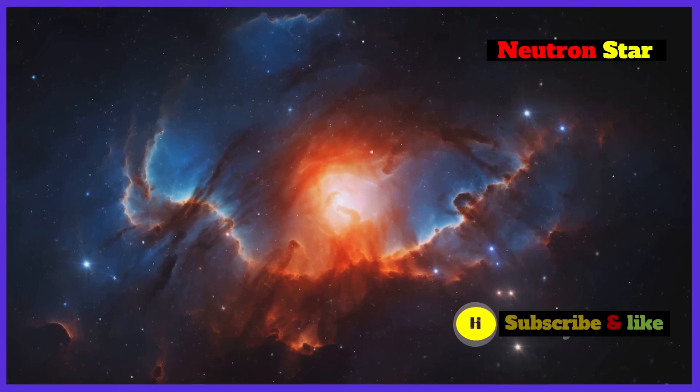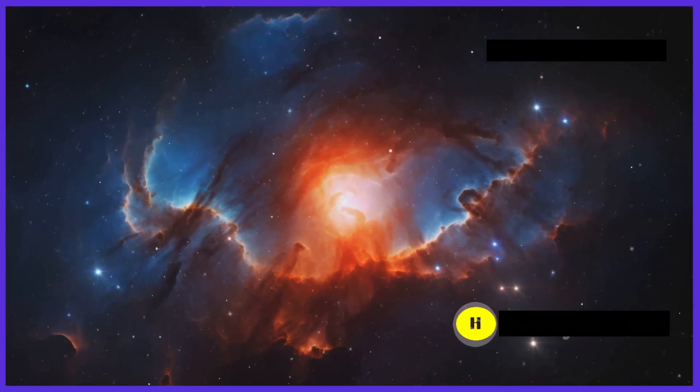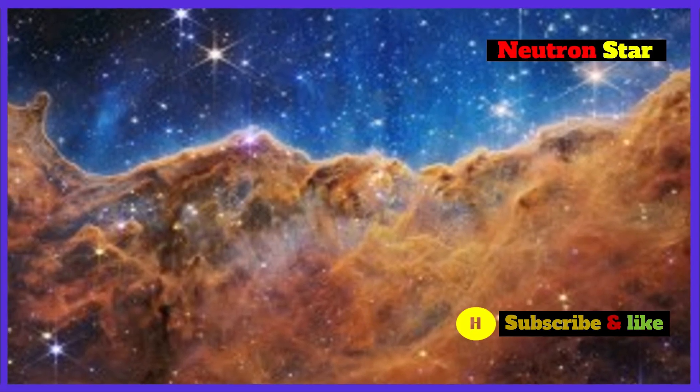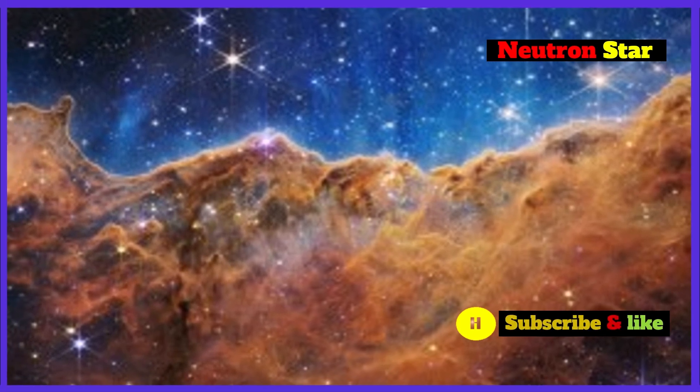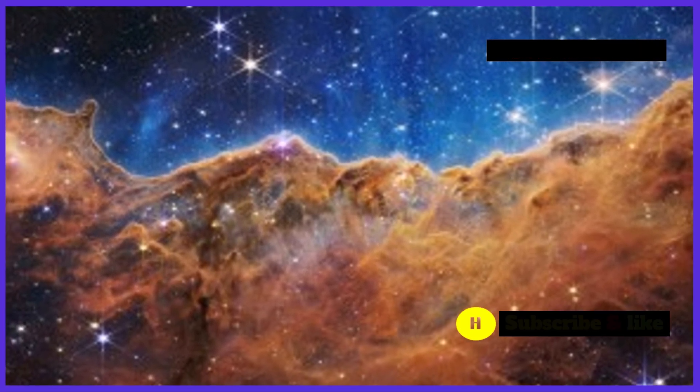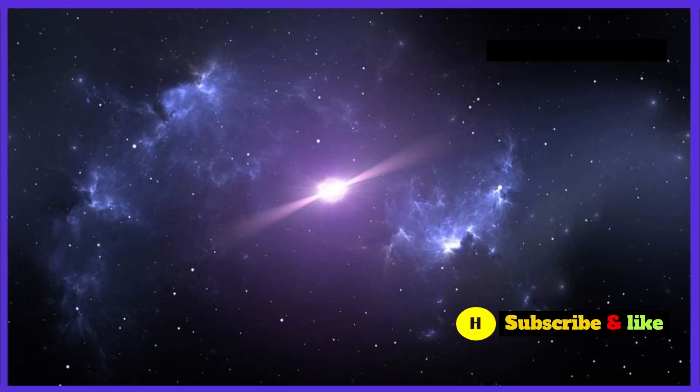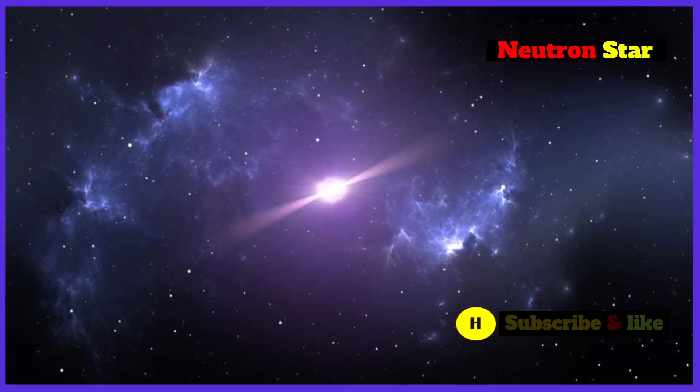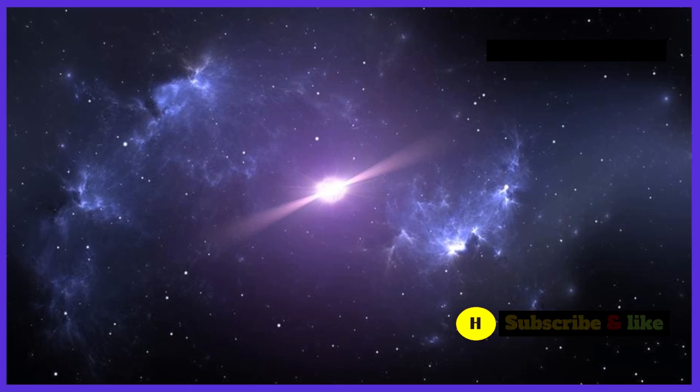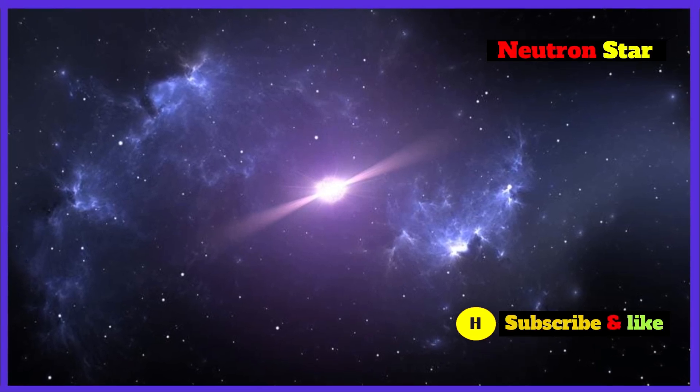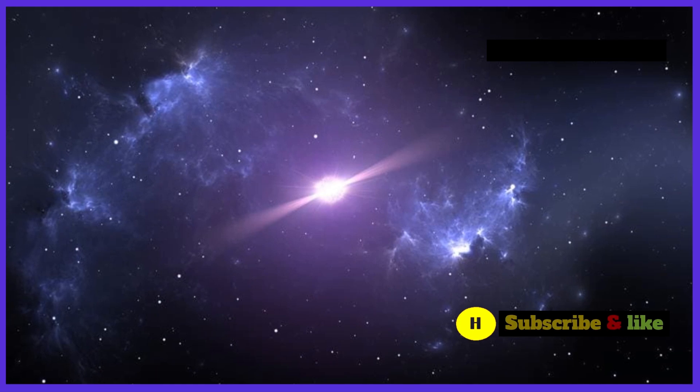So what could possibly generate such powerful bursts in such a short amount of time? These bursts, known as fast radio bursts or FRBs, are one of the most enigmatic phenomena in the universe. Astronomers believe that the most likely culprit is a type of dead star called a neutron star. But what exactly are neutron stars, and why are they so special?